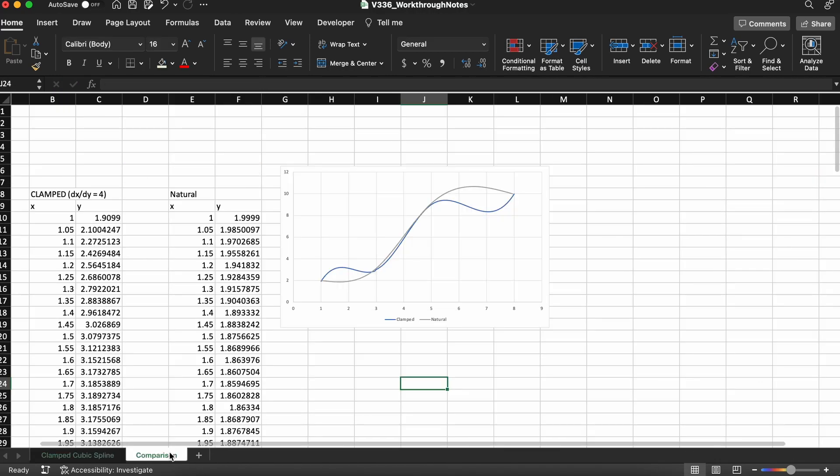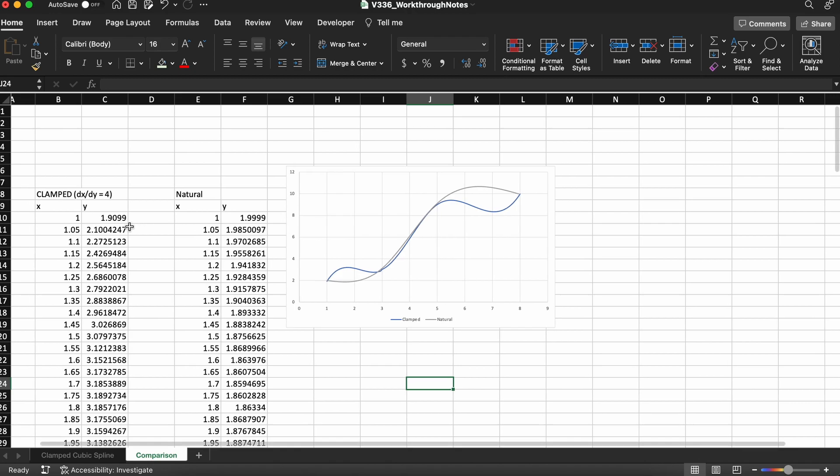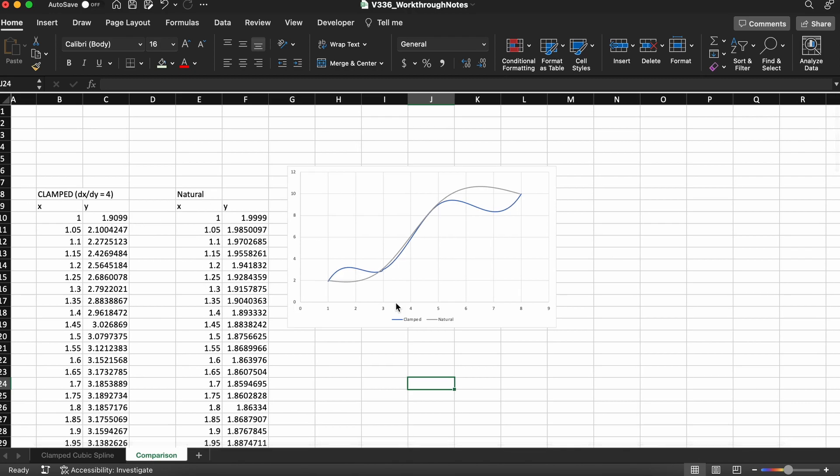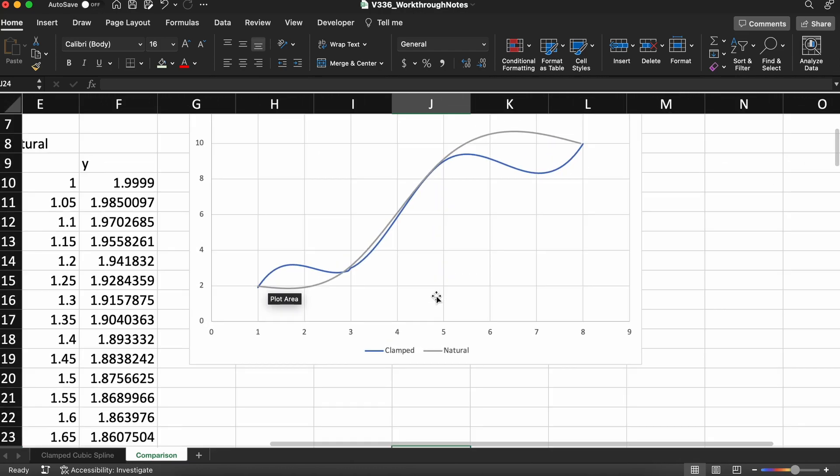In the previous video, we were asked to interpolate over the same set of data as we did in this video. However, in that video, we were using a natural cubic spline, whereas in this video I wanted to use a rather extreme example of a clamped cubic spline to show you how they vary visually.